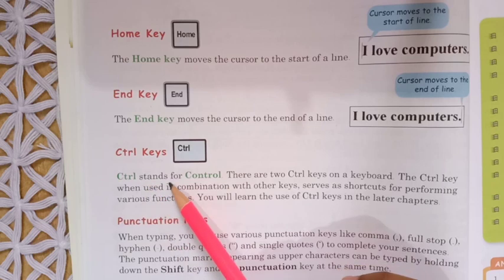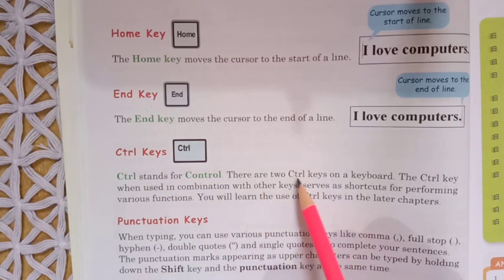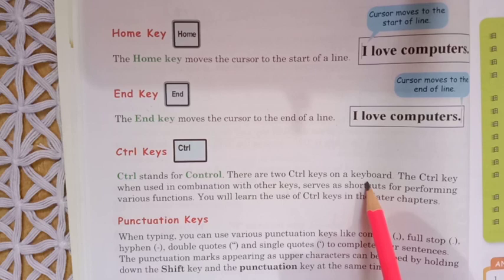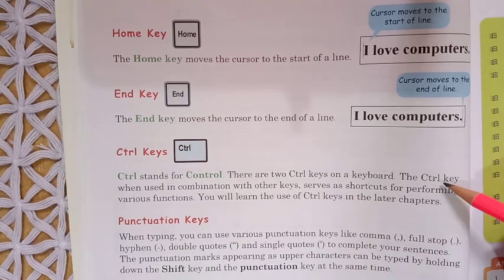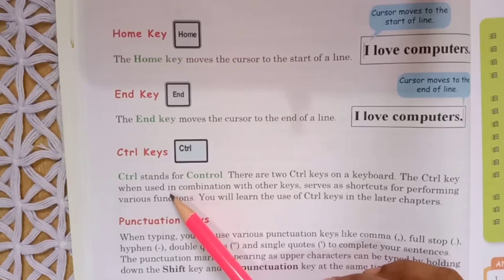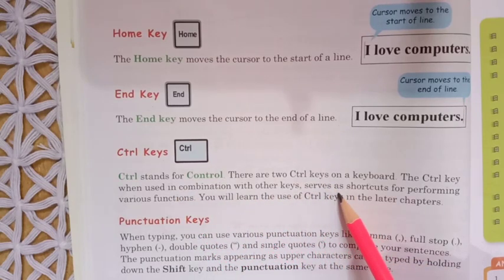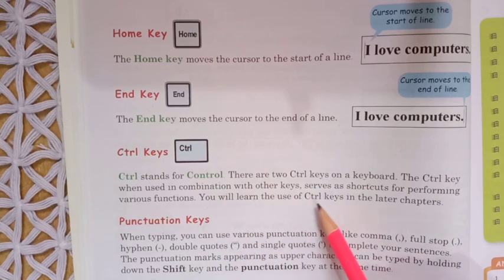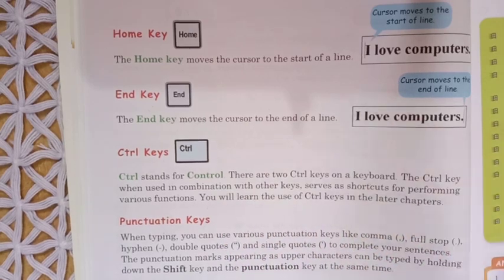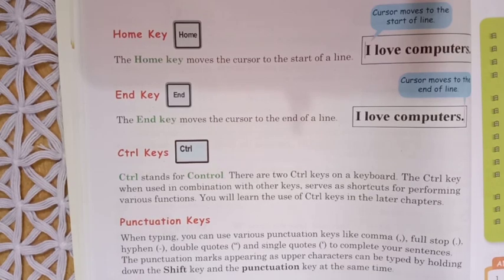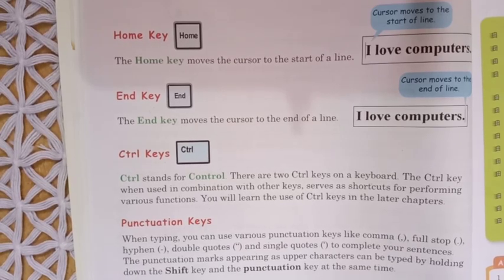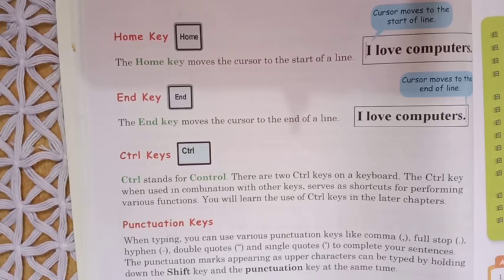CTRL stands for control. There are two control keys on a keyboard. The control key, when used in combination with other keys, serves as a shortcut for performing various functions. We will learn the use of control keys in a later chapter, as introducing all the functions now might be confusing.